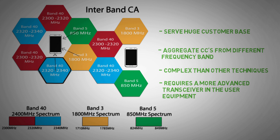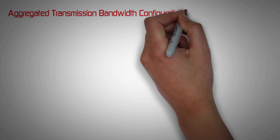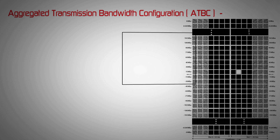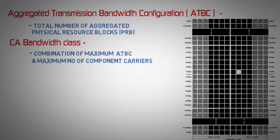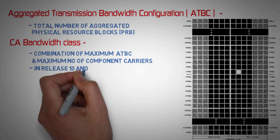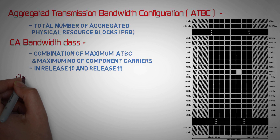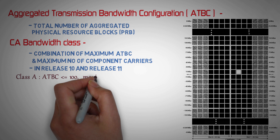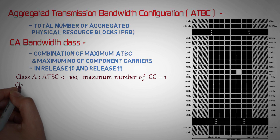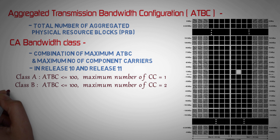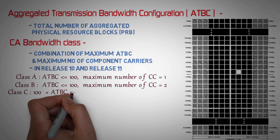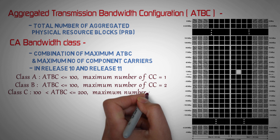To specify different CA combinations, we need to understand some new definitions. Number one: aggregated transmission bandwidth configuration or ATBC — it is the total number of aggregated physical resource blocks. Number two: CA bandwidth class — it indicates a combination of maximum ATBC and maximum number of component carriers. In release 10 and release 11, three classes are defined. Class A has ATBC less than 100 and maximum number of component carriers equal to 1. Class B has ATBC less than 100 but maximum number of component carriers is 2. Class C has ATBC ranging from 100 to 200 and maximum number of component carriers is 2.